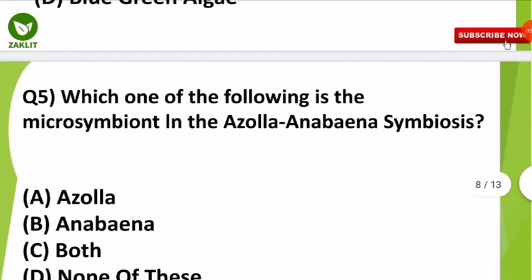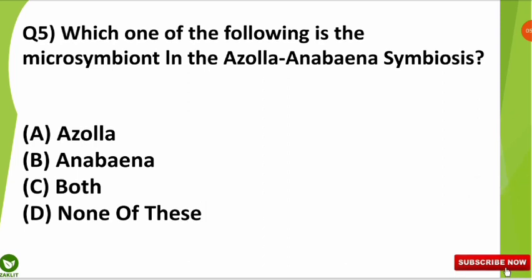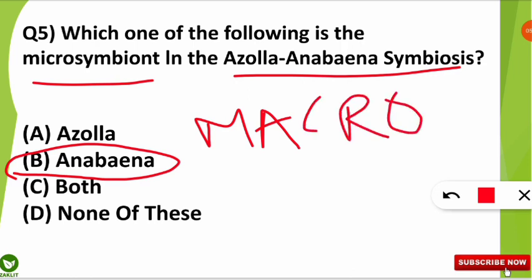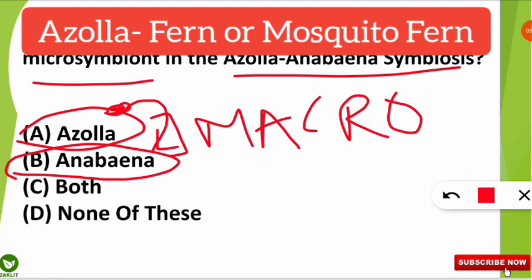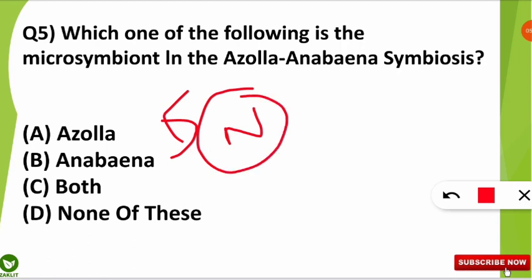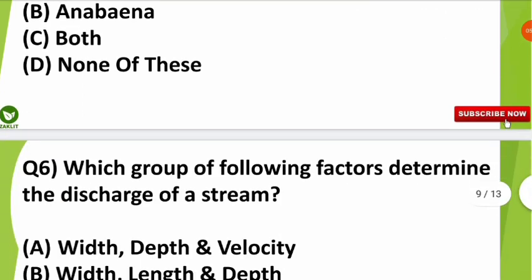The fifth question was: which one of the following is the micro symbiont in the Azolla–Anabaena symbiosis? The micro symbiont is Anabaena, and the macro symbiont is Azolla. In this symbiosis, Anabaena is the blue-green algae that receives habitat from Azolla — the fern — and in return provides nitrogen as food to Azolla.